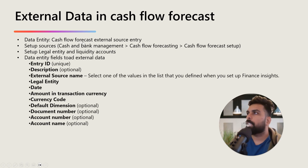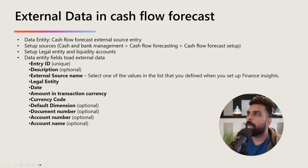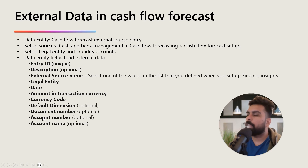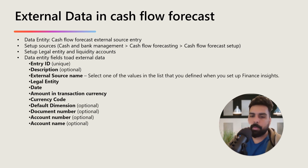To import external data, you use the cash flow forecast external source entry data entity. You set up the sources, then set up legal entities, and the data entity has specific columns. You have an entry ID which must be unique, description is optional, then you select the source you have configured, the legal entity, the date, the amount, and the currency — all of which are important. Default dimensions, document number, or account number such as a customer account or name are optional fields you can include.